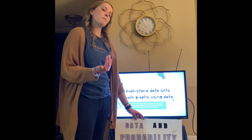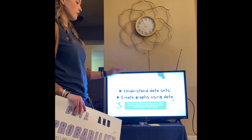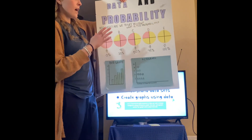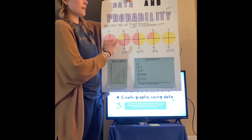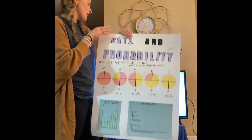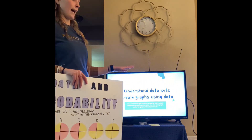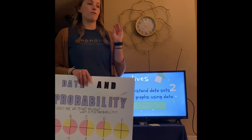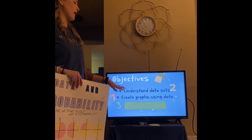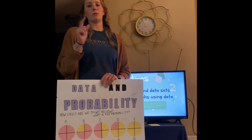To recap this lesson, I want to make sure that we met our objectives. The first objective was understanding data sets, and we did this by using our anchor chart, learning what graphs are, how to read probability, and how to match probability to fractions. The second objective was creating graphs using data, and the students presented very colorful and wonderful graphs. So I believe we met both objectives. Thank you for sitting through my lesson, and I loved each and every one of your posters.